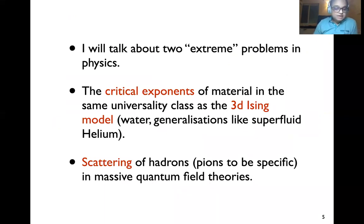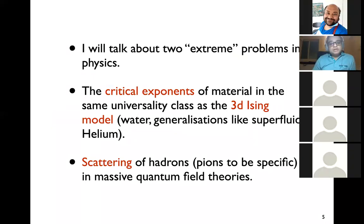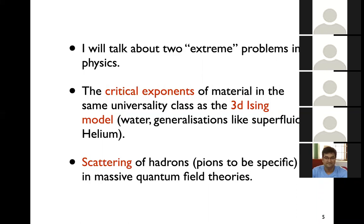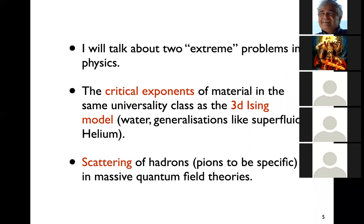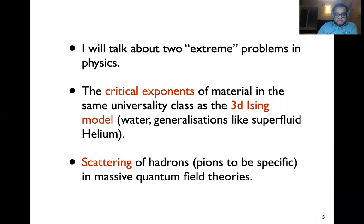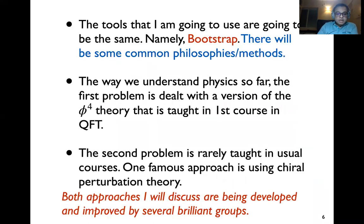The first problem is about critical exponents of materials in the same universality class as the three-dimensional Ising model — for example, water. These are literally things that can be experimentally measured. The second example is scattering of hadrons and pions, specifically in massive quantum field theory. The tools I'll use are bootstrap methods, though the technology differs between the two problems.